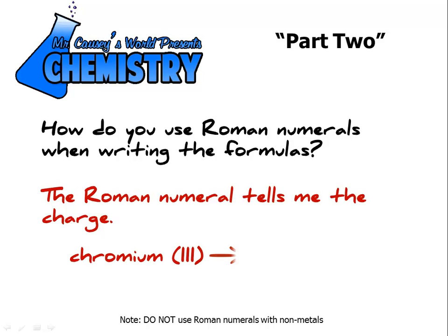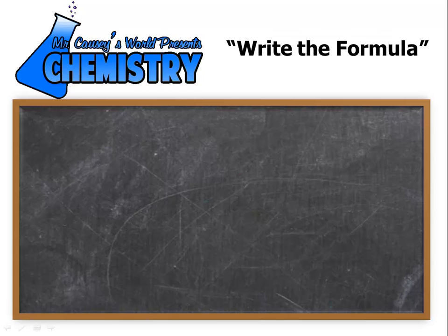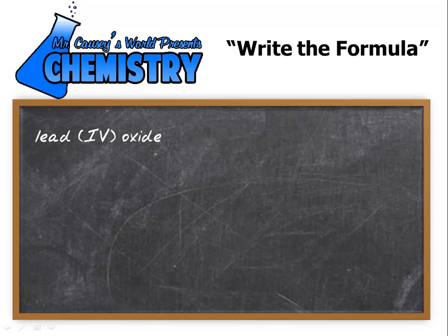Chromium three tells me that it is Cr3+, that there's a three plus charge. Let's practice a couple of problems. Go to the magic blackboard and write the formula for lead four oxide. Well the lead four would be Pb4+, and the Roman numeral is the four plus that tells me there's a four plus charge.